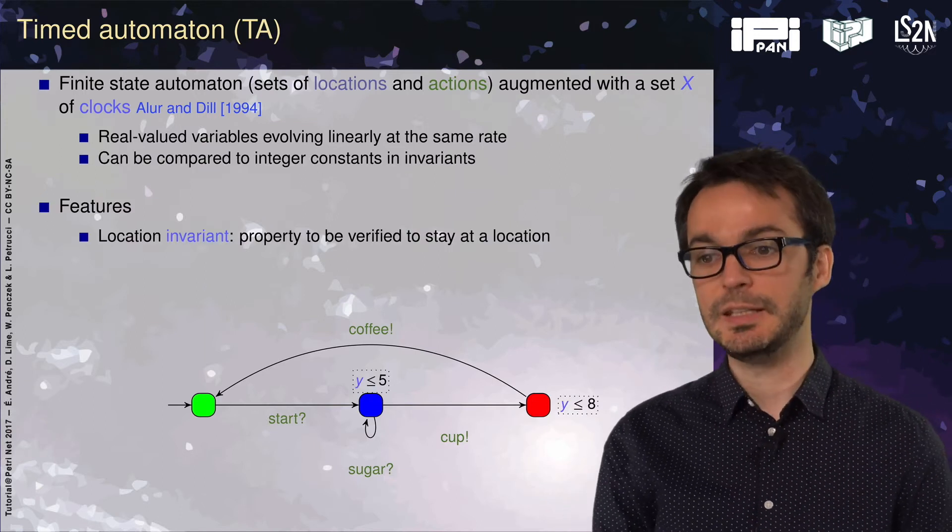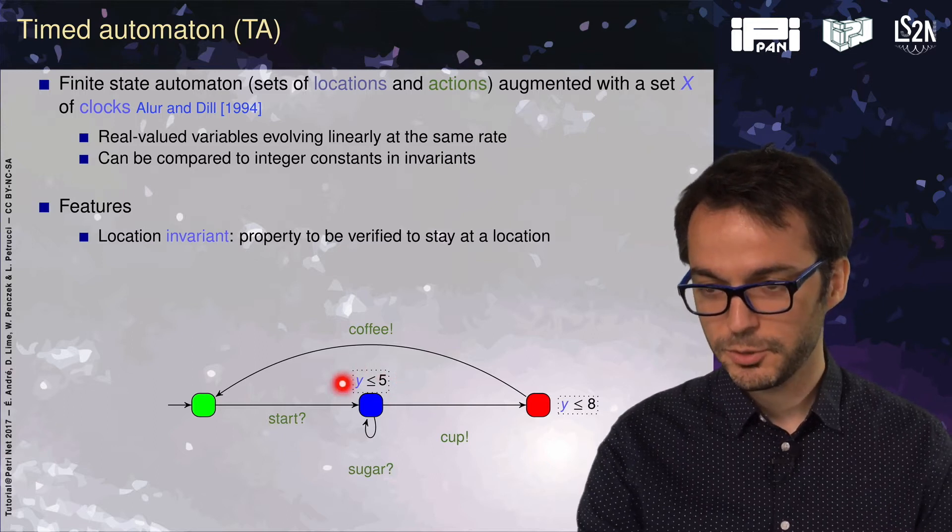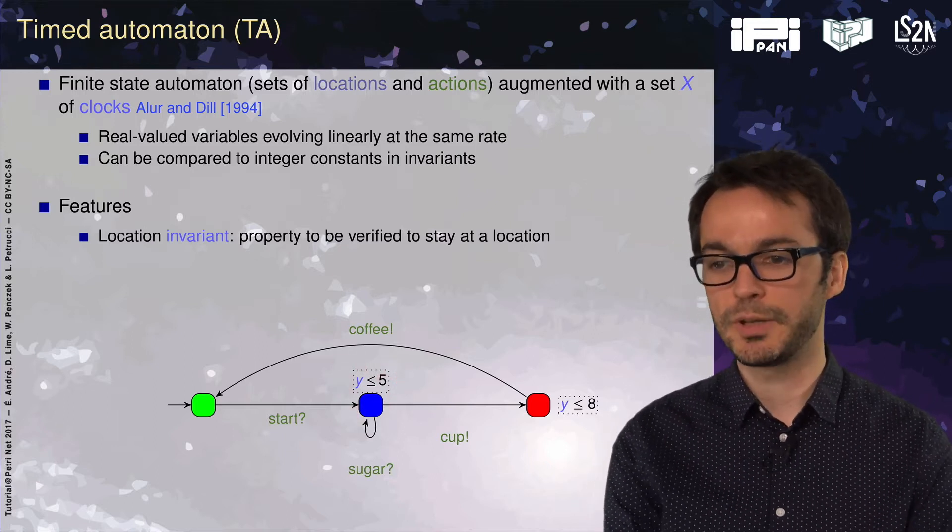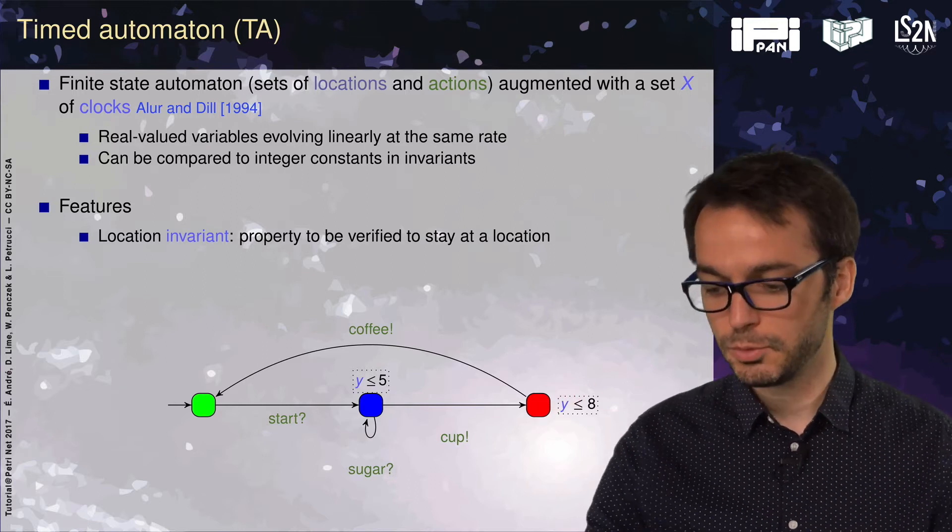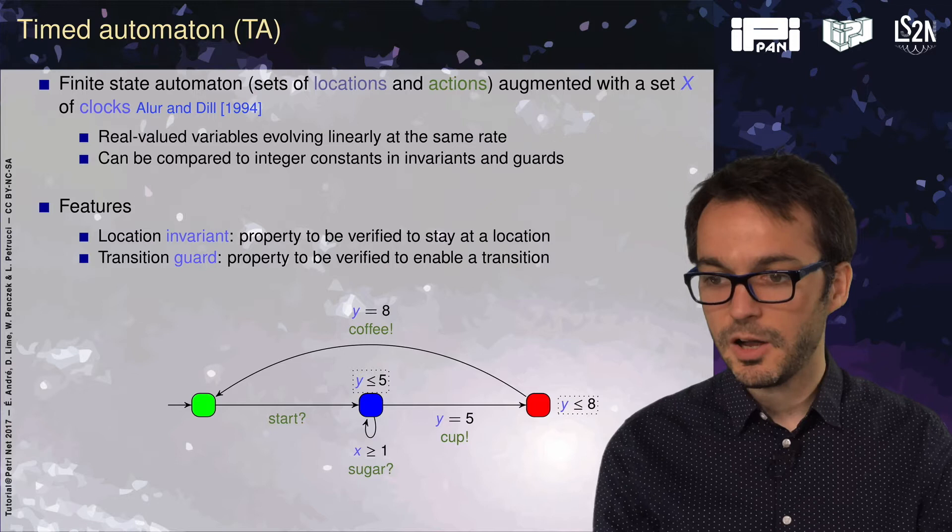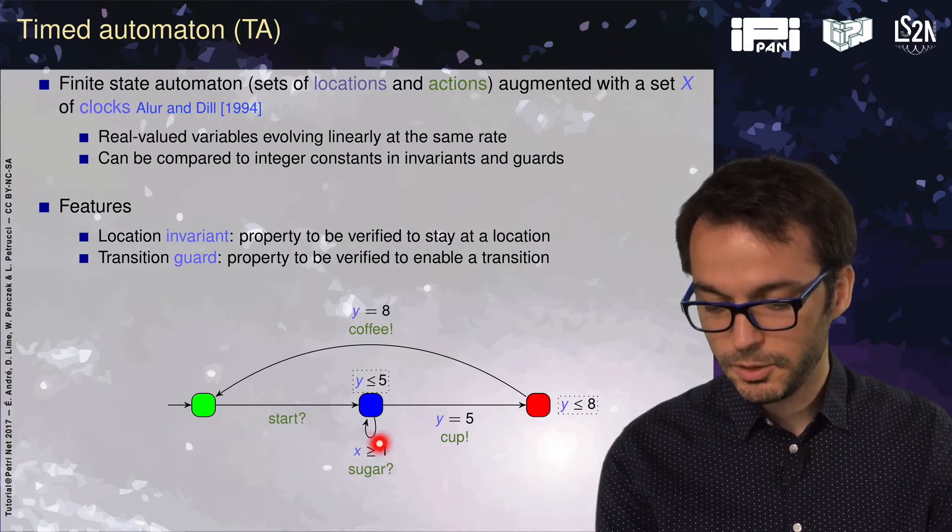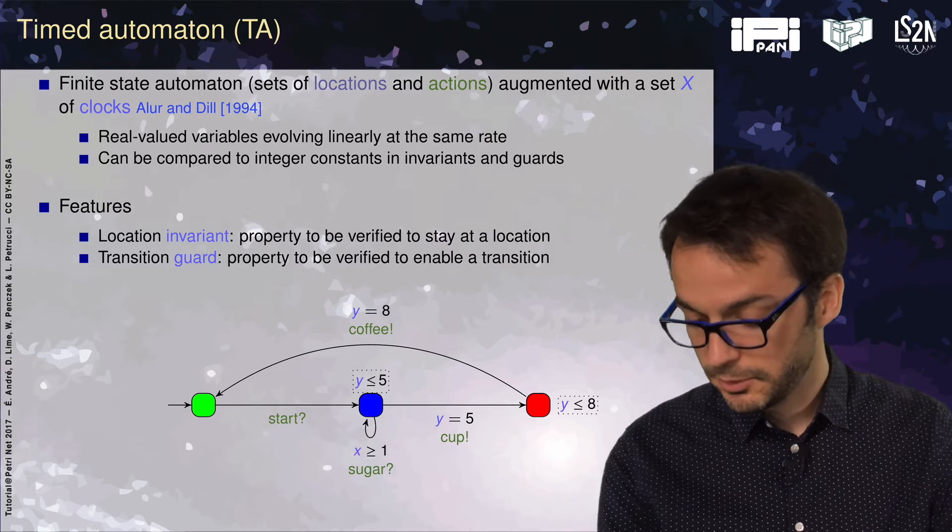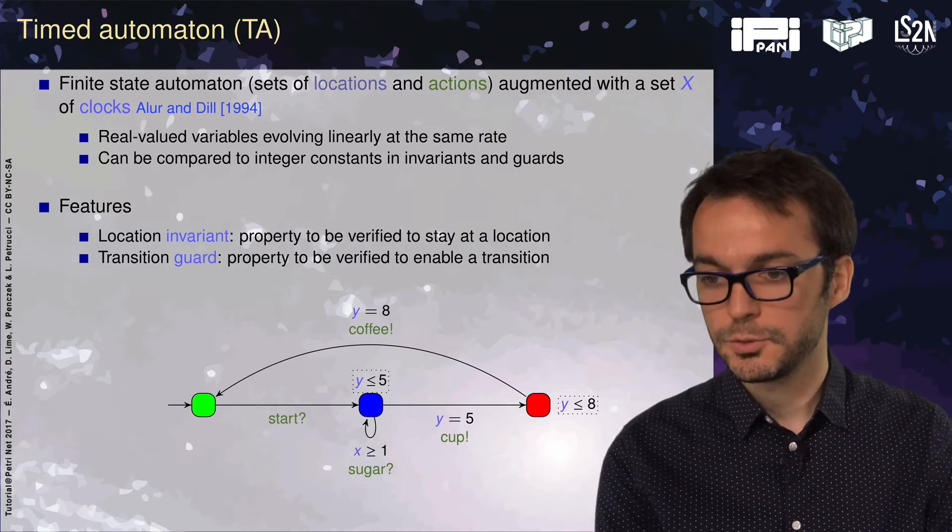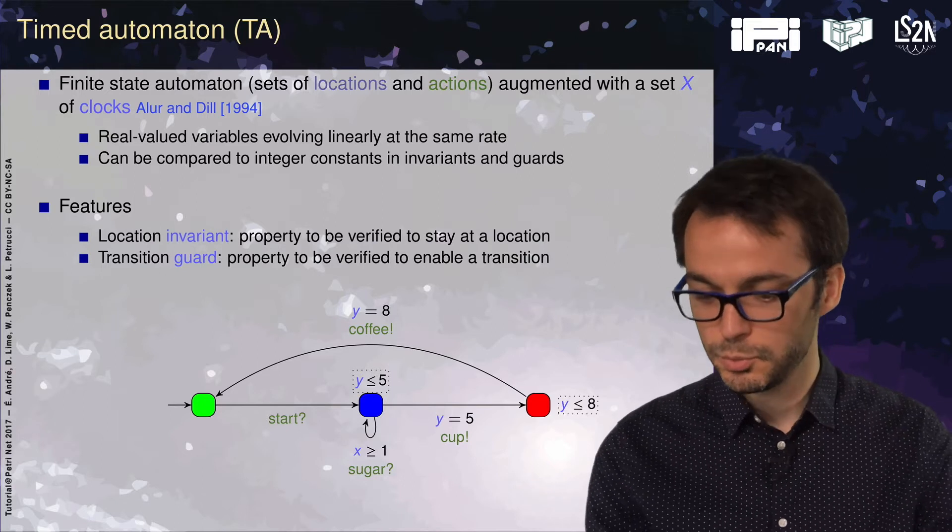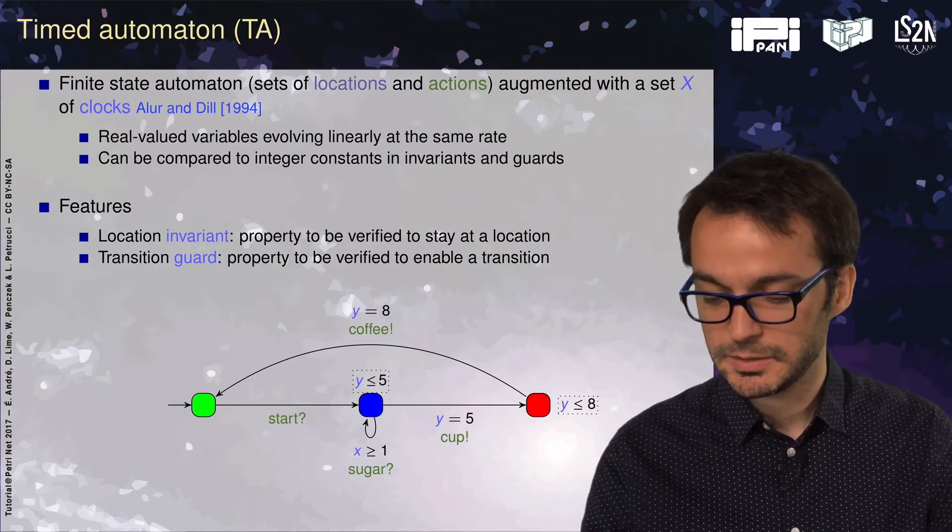Clocks can be used in location invariants. Here we have that clock y should be smaller or equal to 5 to remain in the blue location, and y should be smaller than 8 in the red location. We have guards, which are conditions on transitions. Here x should be larger than 1 to loop on the blue location, y should be exactly equal to 5 here and exactly equal to 8 here.